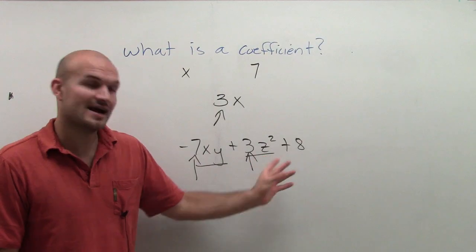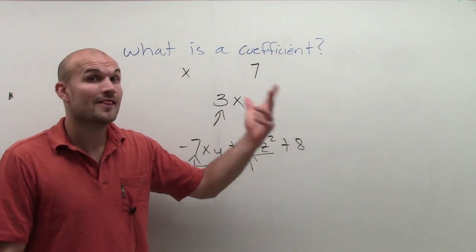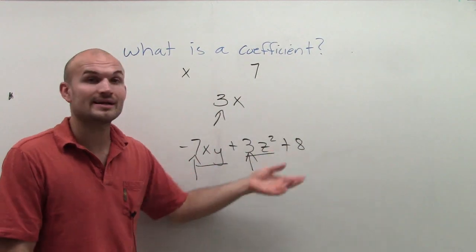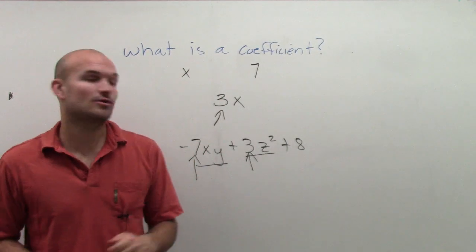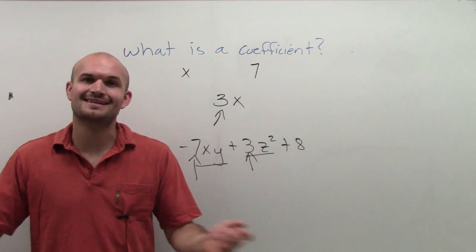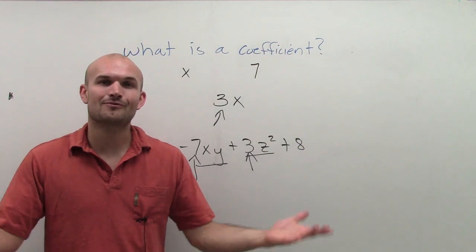Well, the two factors are 3 and z squared. The number factor is 3. So that is my coefficient, as is 7 is my coefficient for this term. So that is a brief little description of what the coefficient is.